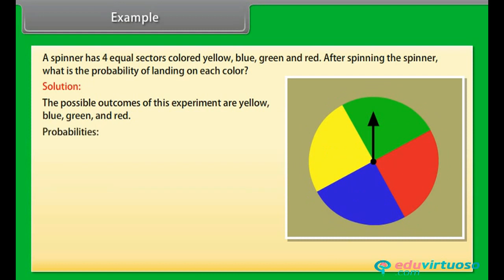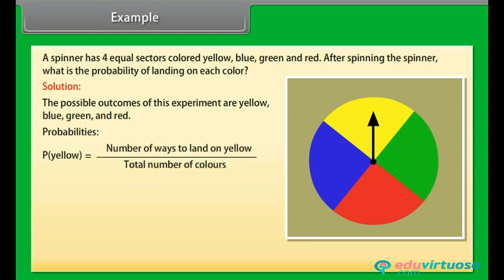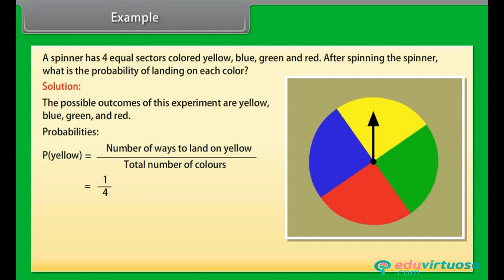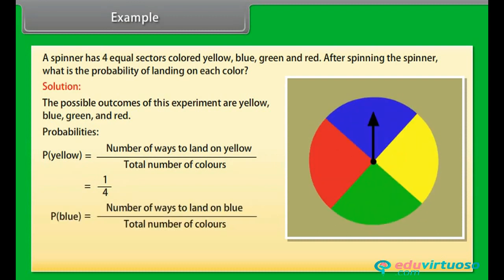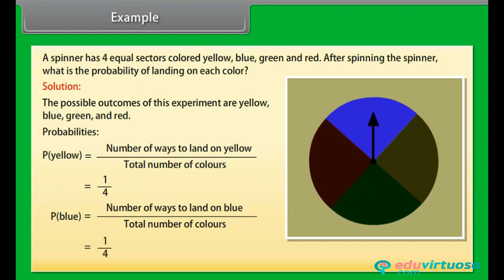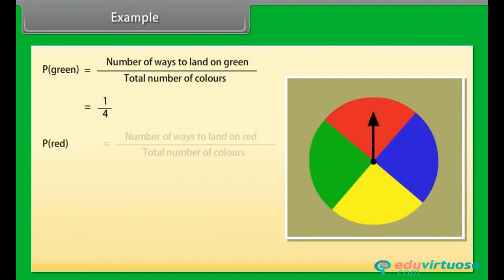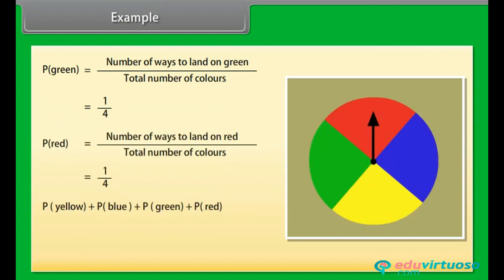Now let's find the probabilities. Probability of landing yellow is number of ways to land on yellow by total number of colors, that is equal to 1 by 4. Probability of landing blue is number of ways to land on blue by total number of colors, that is equal to 1 by 4. Similarly, we will find the probability for green and red. And if we add all these probabilities, we will get one.